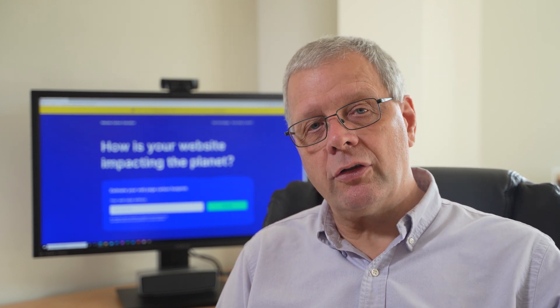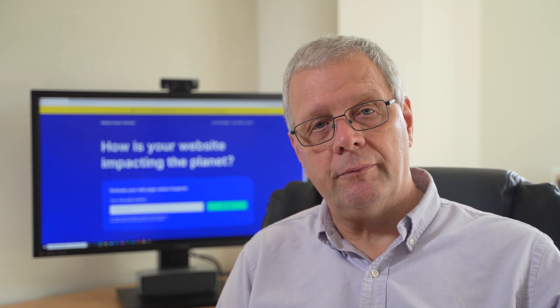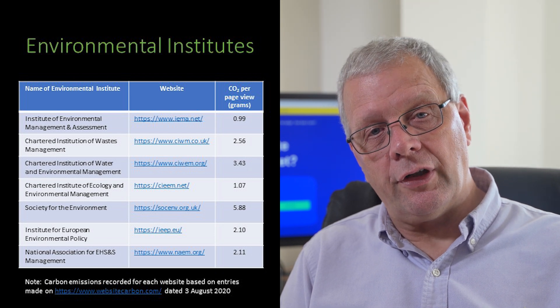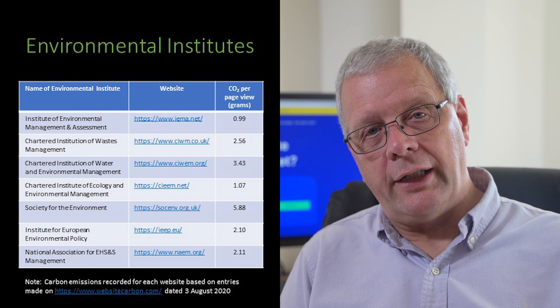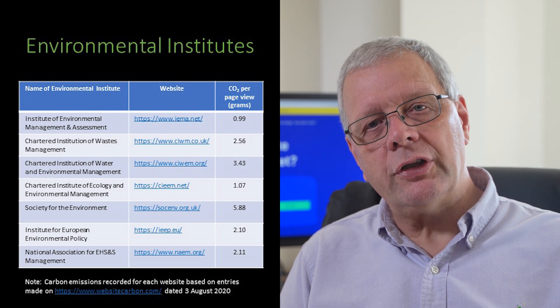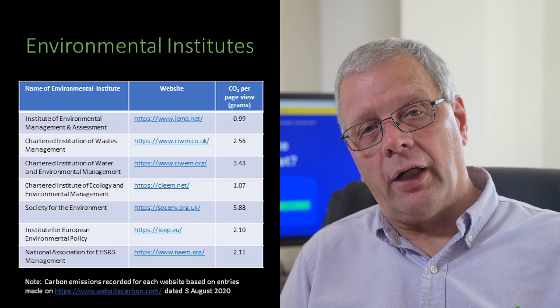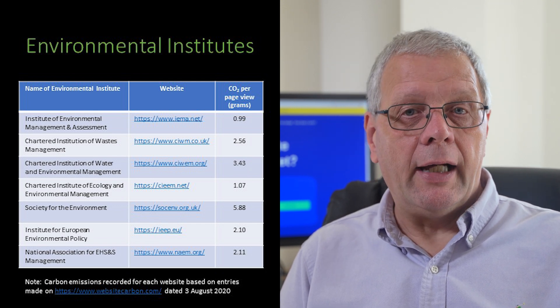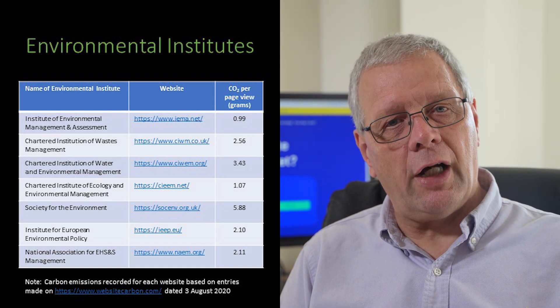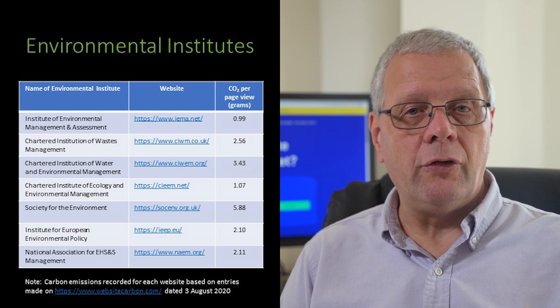I next turned to environmental institutes, as these organisations provide membership support and environmental resources and are likely to be keenly used to access environmental information. All of the environmental institutes had higher estimated carbon emissions than the government environment agencies, excluding the German Environment Agency, with the Institute of Environmental Management and Assessment being the only institute with emissions lower than one gram at 0.9 grams of CO2 per page view. Again, there is an outlier — the Society for the Environment — with a significantly higher estimated carbon emission at 5.88 grams of CO2 per page view.